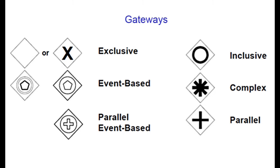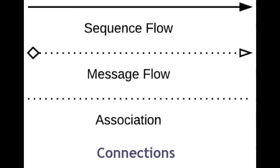A gateway can also be a parallel gateway, used to create parallel paths without evaluating any conditions. Or it can be inclusive, used to create alternative flows where all paths are evaluated. A sequence flow is represented with a solid line and arrowhead and shows the order in which activities are performed.